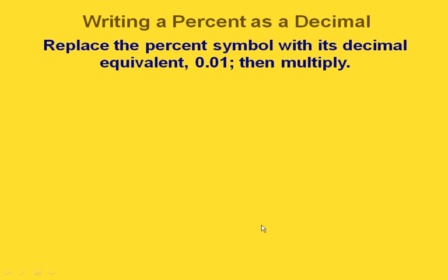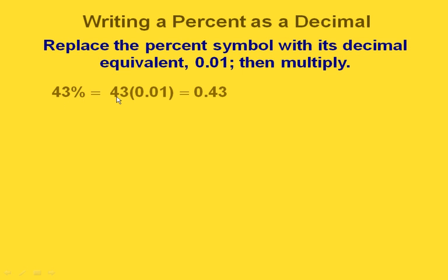Let's look at how to write a percent as a decimal. The first thing we want to do is replace the percent symbol with its decimal equivalent, which is one hundredth, and then we're going to multiply. So if we start out with 43% and want to write that in decimal form, we're going to replace the percent symbol with one hundredths written in decimal form and multiply. That's going to give us 43 hundredths.